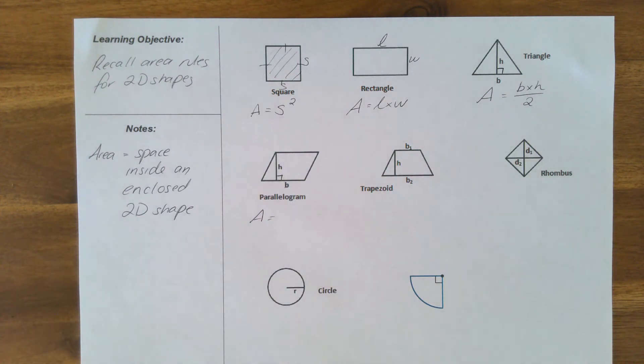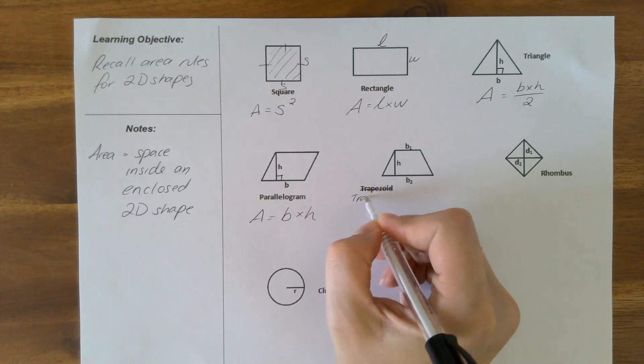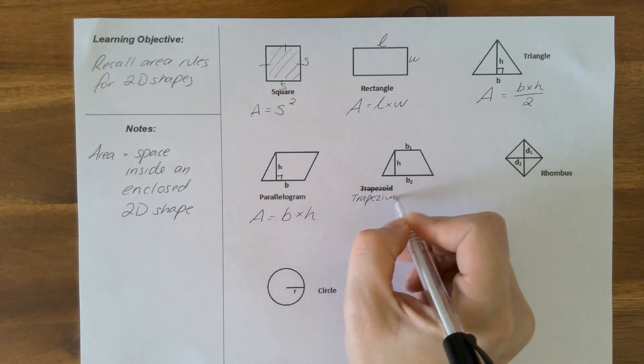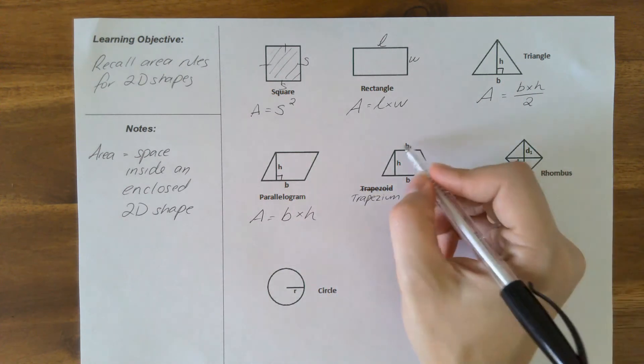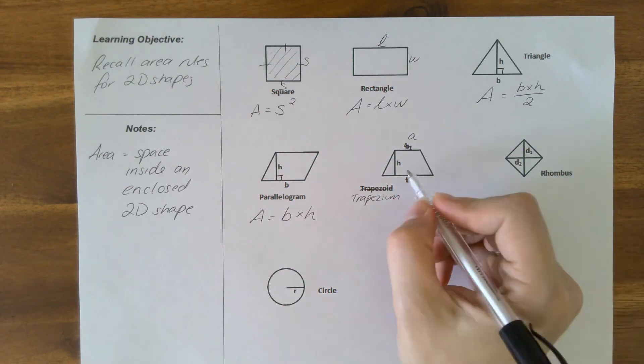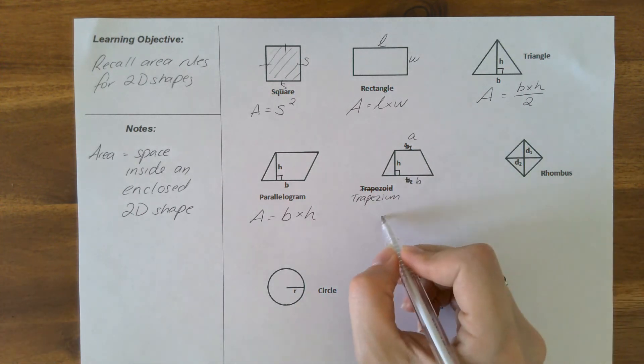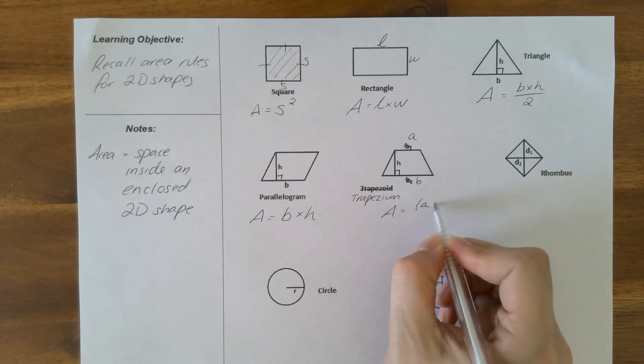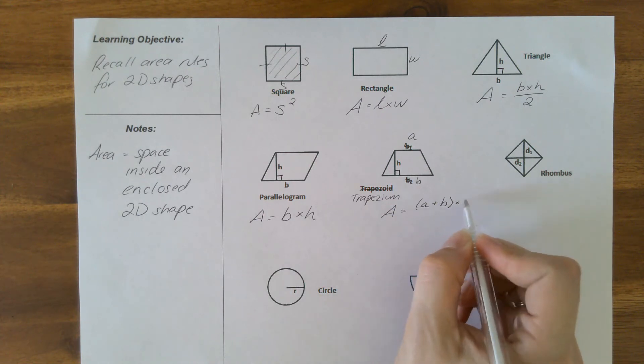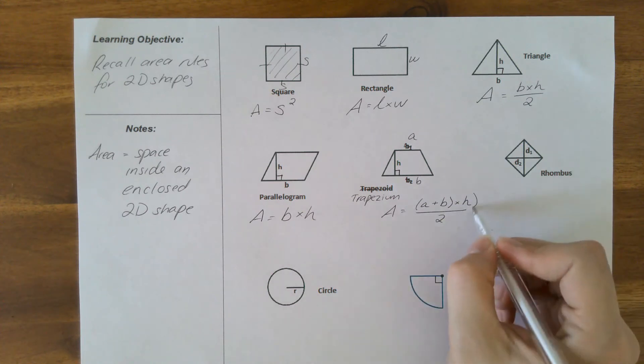Our trapezoid - I'm going to cross that out and write trapezium, that is how we usually see them. We have some other information here. We usually call this top side a, and this bottom b for base, and the h is our perpendicular height that runs at right angles to the base again. This time our area is the top side plus the base multiplied by the height, and all of that is divided by 2. So you might like to put brackets around that part as well.